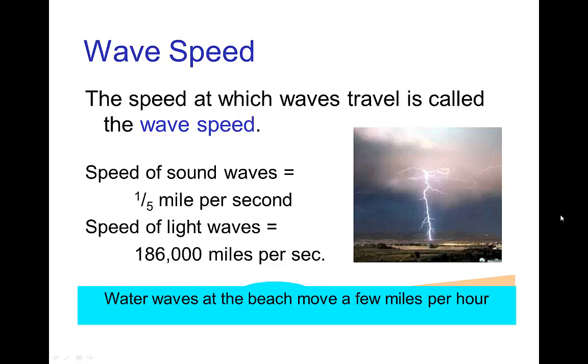Now, the last property of waves that connects wavelength and frequency is the wave speed. And the wave speed is simply the speed at which waves travel. So sound waves are rather fast, speed of light waves is extremely fast, water waves are relatively slow, just a few miles an hour, and so forth.